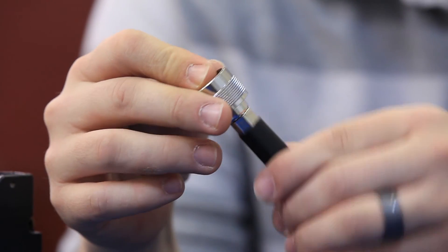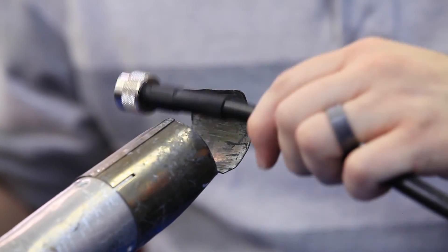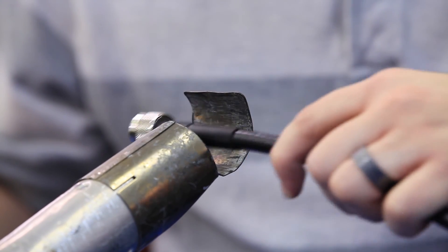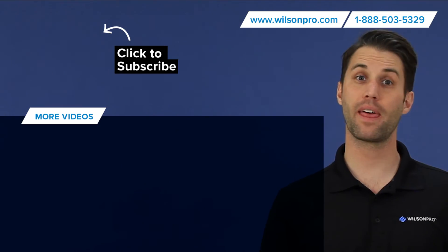Finally, slide the heat shrink tubing up around the connector and heat it using a heat gun or other heat source, shrinking it down tight around the connector and the cable. With that, you're done.